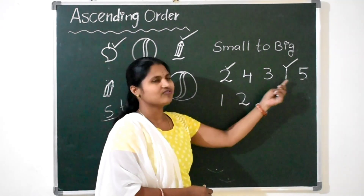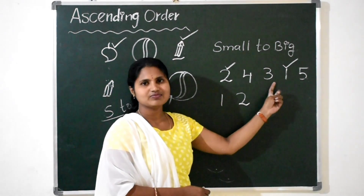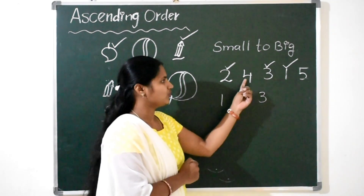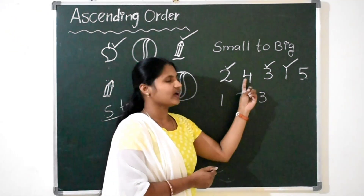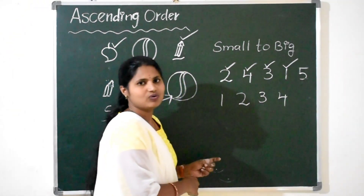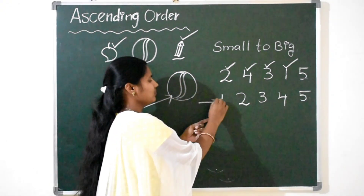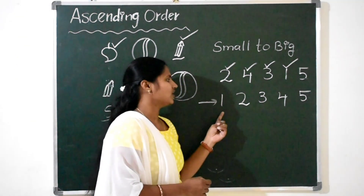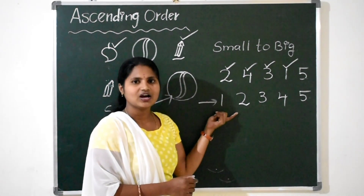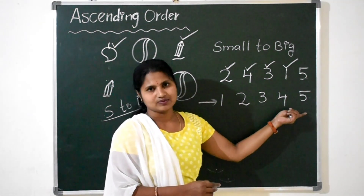Next we have 3 more numbers: 4, 3, 5. Which number comes next? Very good, 3 comes. 3 is the smallest number compared to these two. Next, 4 and 5 — which number comes first? 4 comes first. And the last number we have is 5. Now we have arranged the numbers from smallest to biggest: 1, 2, 3, 4, 5. We have arranged the numbers in ascending order.